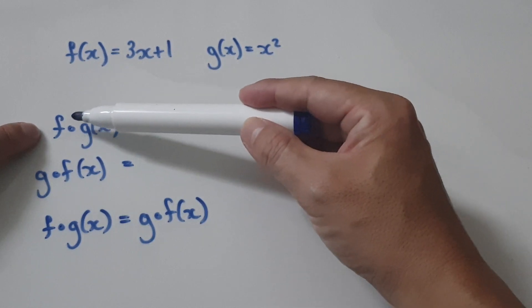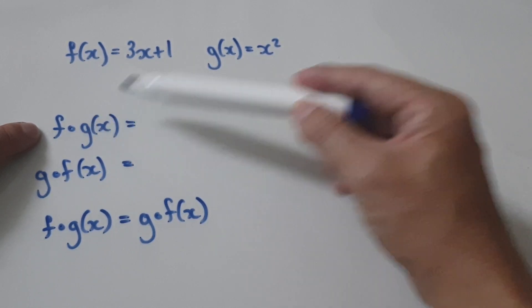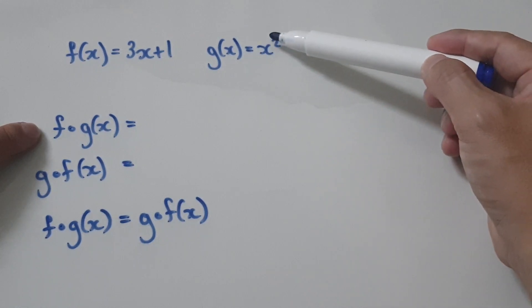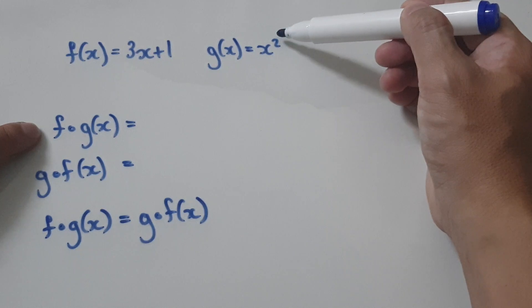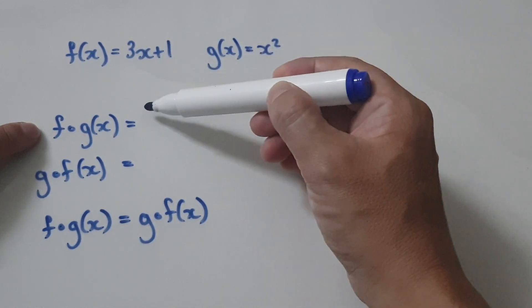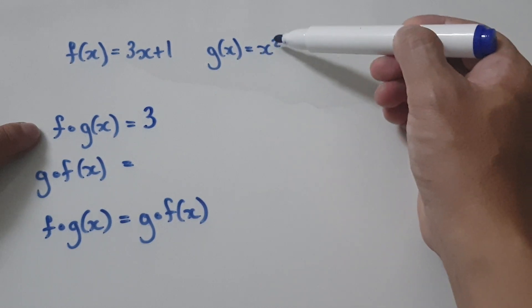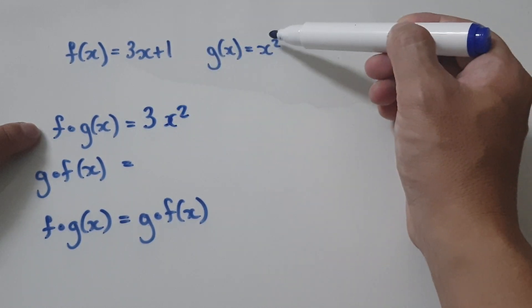First, you've got to get the function g, bury it inside the f function. So put this x squared inside this x here. So that would be three. So when you put this into the x squared, this would be x squared because when you put this